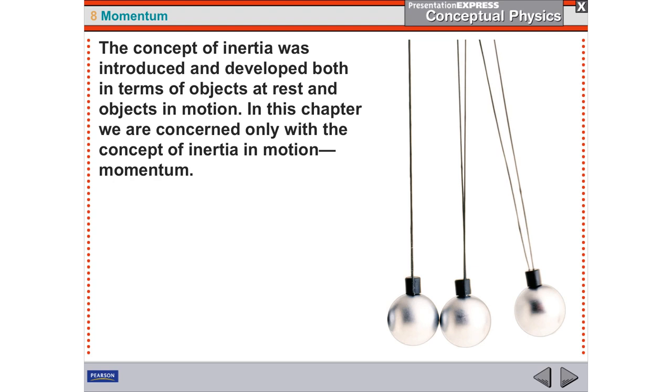If you have a velocity, if you have some kind of speed in a direction and you have a mass, then you have something called momentum. Momentum is mass times velocity, and we're going to use the Greek letter rho, which looks like a P, equals mass times velocity.